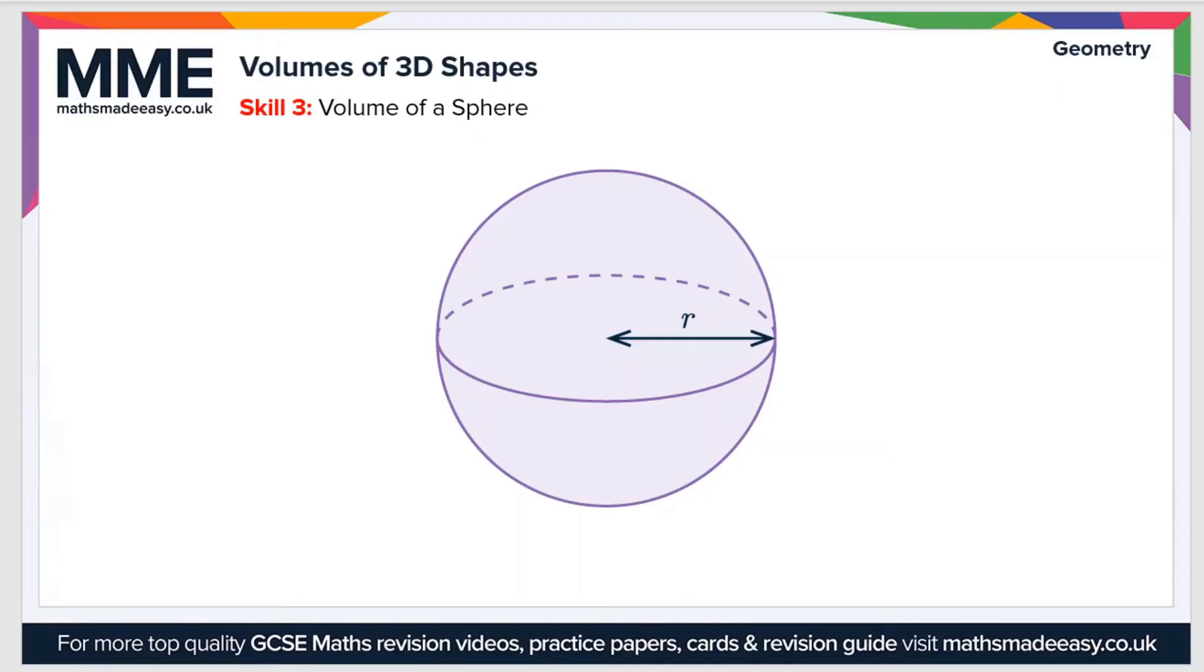So the final skill that we'll look at in this video is calculating the volume of a sphere, and once again, it's a specific formula that we need. The formula is volume equals 4 divided by 3 pi r cubed. So let's say that the value of r was 3. If we plug these in to the formula, that would give us 4 over 3 pi times 3 cubed. So volume equals 4 divided by 3 pi times 27, and if you cancel that down, you should get a value of 36 pi.